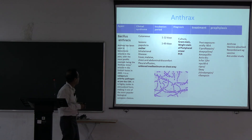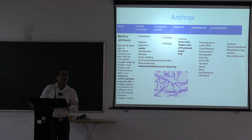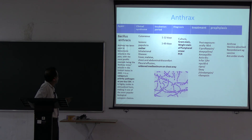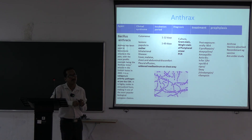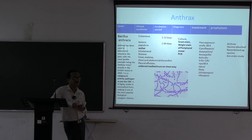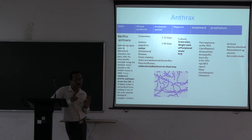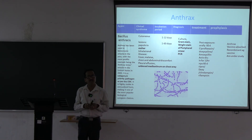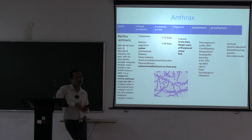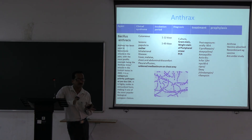Anthrax (Bacillus anthracis) is a Category A agent. When used as a bioterrorism weapon it is typically spread by the inhalation route, causing pulmonary anthrax. The classic chest X-ray finding is widening of the mediastinum, which should raise suspicion for anthrax.